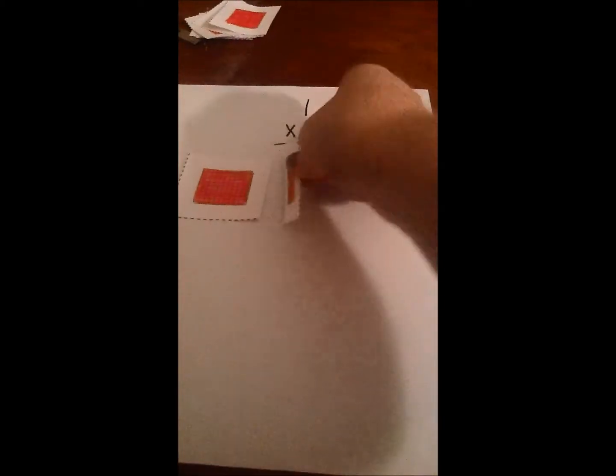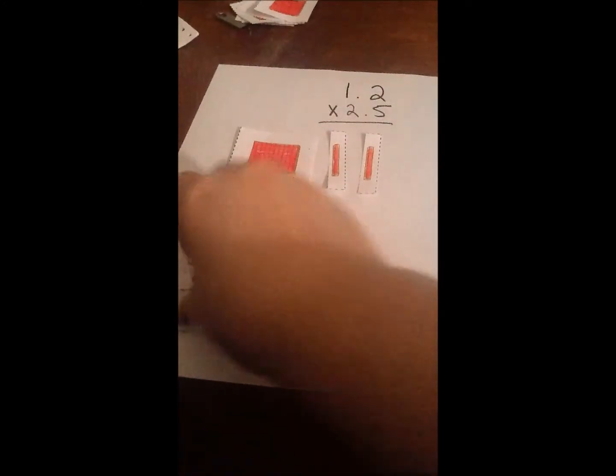So we're going to start with 1.2 for one side, and then 2.5 going down, so 2, 1, 2, 3, 5, and then we're going to fill in the rest of the holes to make a rectangle.